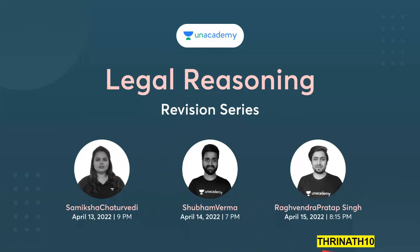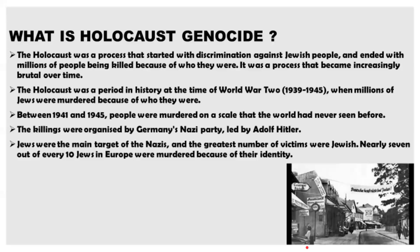Now talking about what is Holocaust genocide — genocide means mass killing of people because of who they are. The Holocaust was the process that started with discrimination against Jewish people. As already mentioned, this genocide was led by Hitler, it was against Jewish people, and it ended with the killing of millions of people. It was a process that became increasingly brutal over time.